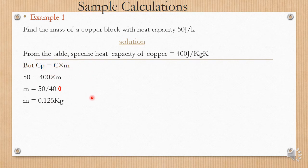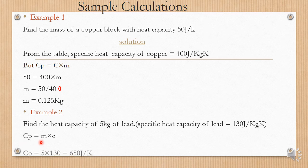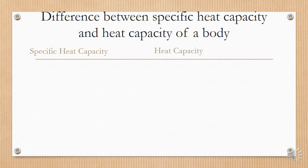Example two: find the heat capacity of 5 kg of lead. The specific heat capacity of lead from the table is 130 joules per kilogram per Kelvin. Using CP equals m times c: CP equals 5 kg times 130, which gives 650 joules per Kelvin.